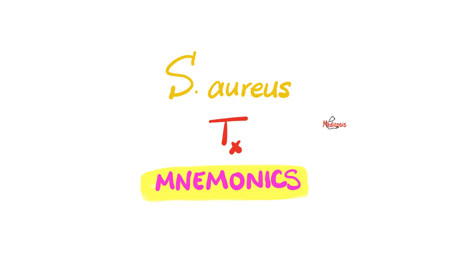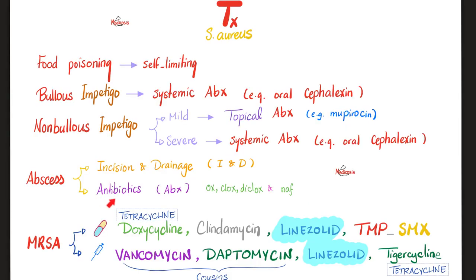Mnemonics on the treatment. If Staph aureus is sensitive, give oxacillin, cloxacillin, dicloxacillin, and nafcillin. But if Staph aureus is resistant — a.k.a. MRSA — it depends on whether you use oral therapy or intravenous therapy. Here's how to remember it: linezolid is always number three.